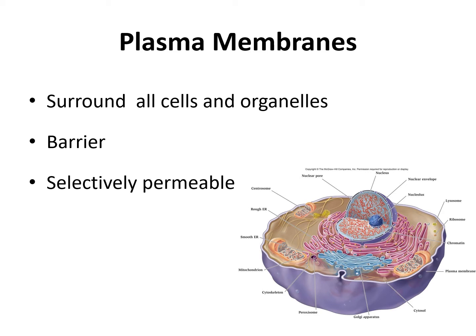Plasma membranes are selectively permeable. Permeable means that some molecules can cross the membrane going into the cell, and other molecules can leave the cell and go out to the environment. It is selectively permeable because not all molecules can cross the membrane — only certain types of molecules are able to cross.